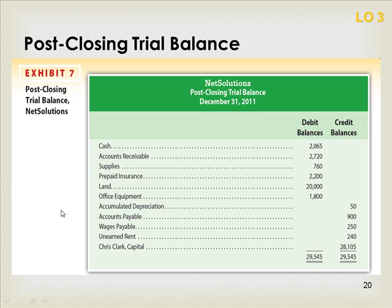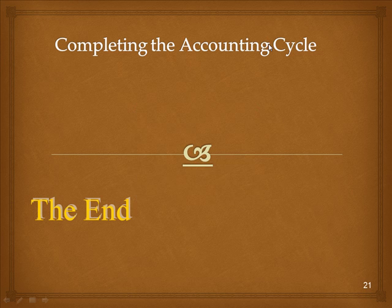Once we prove the equality of the debits and credits, we have balanced our post-closing trial balance and can continue on with the rest of the year's close-out. As an accountant, your job is never finished. This concludes Part 2 of Completing the Accounting Cycle.